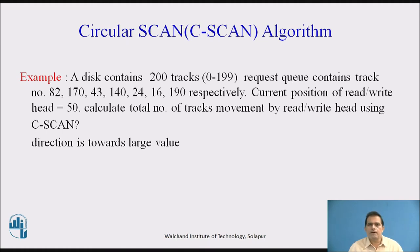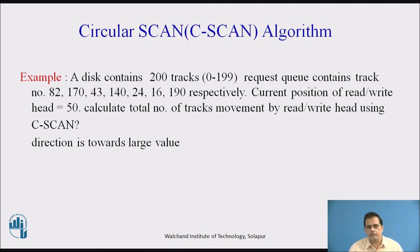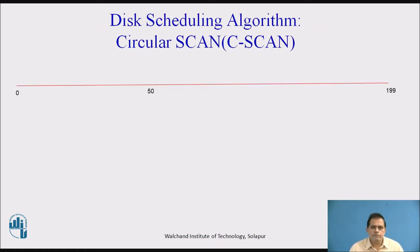For this algorithm, we have to decide the direction — towards the large value or towards the small value. In this example, the direction is decided towards the large value. I have drawn tracks from 0 to 199 and pointed 50 as the current head position. From 50, the head circulates to the next position, which is 82 — the next large value from 50 in the request queue.